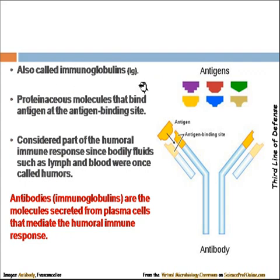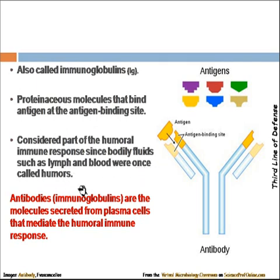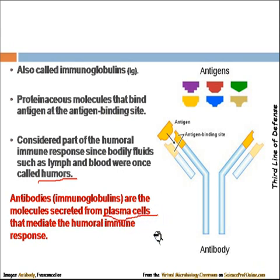Antibodies are known as immunoglobulins — proteinaceous molecules that bind the antigen at the antigen binding sites. They are part of the humoral immune response, since bodily fluids such as lymph and blood were once called humors, which is why antibody-mediated immunity is also known as humoral immunity. These antibodies are secreted from special cells known as plasma cells, which are the major players in the humoral immune response.